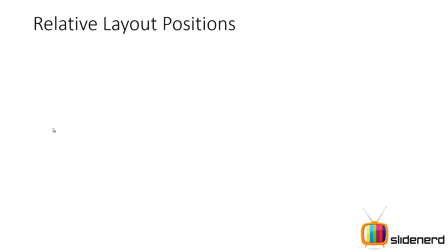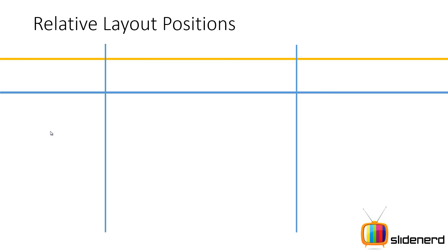Before we talk about anything, you guys need to get one picture straight in your head. Your relative layout is nothing but just a big blank wall, and all your controls are like chewing gum. You just stick your controls on the wall from all sides and that ensures that you have a good appearance. Now let me explain exactly what this means with some attributes.